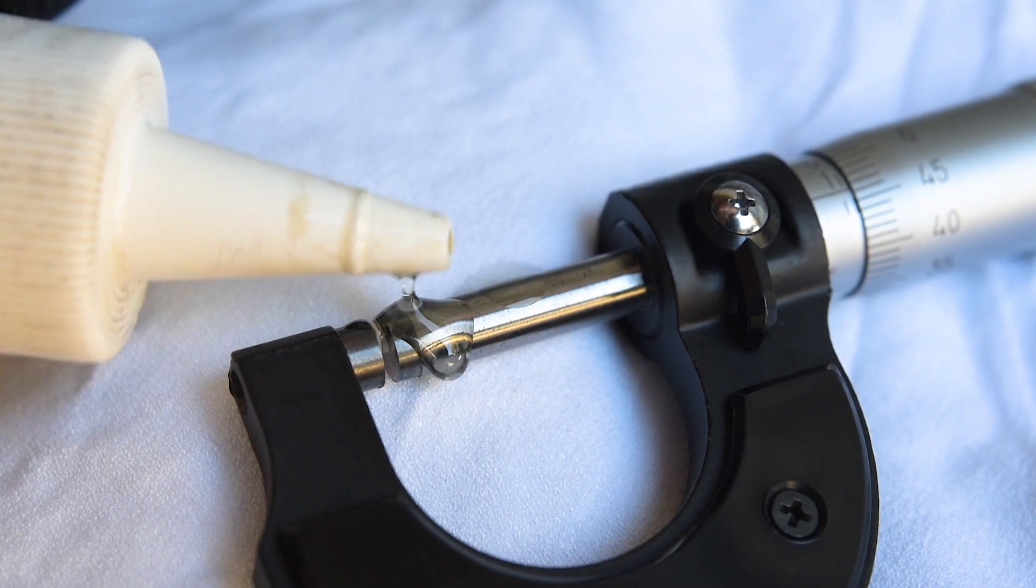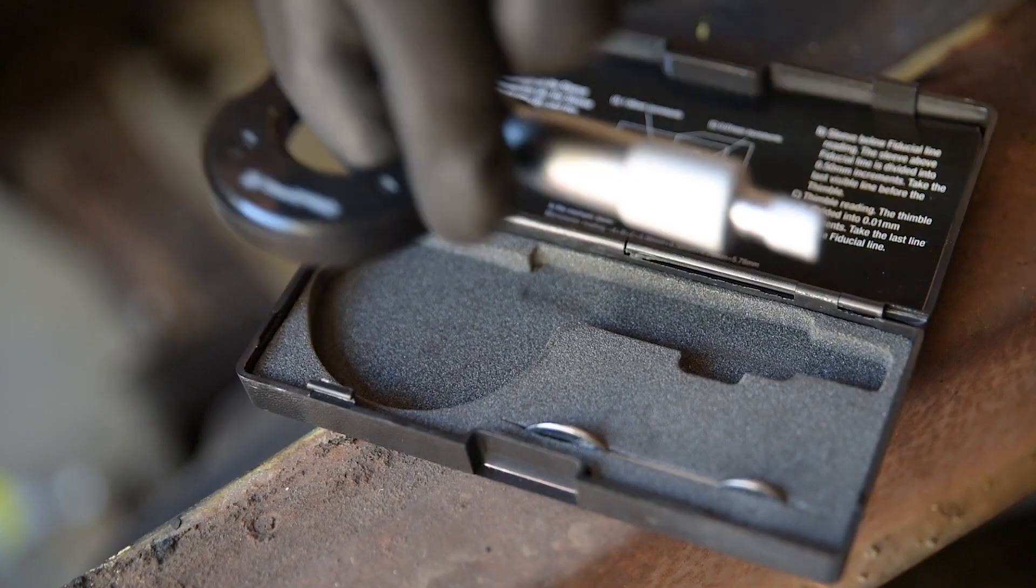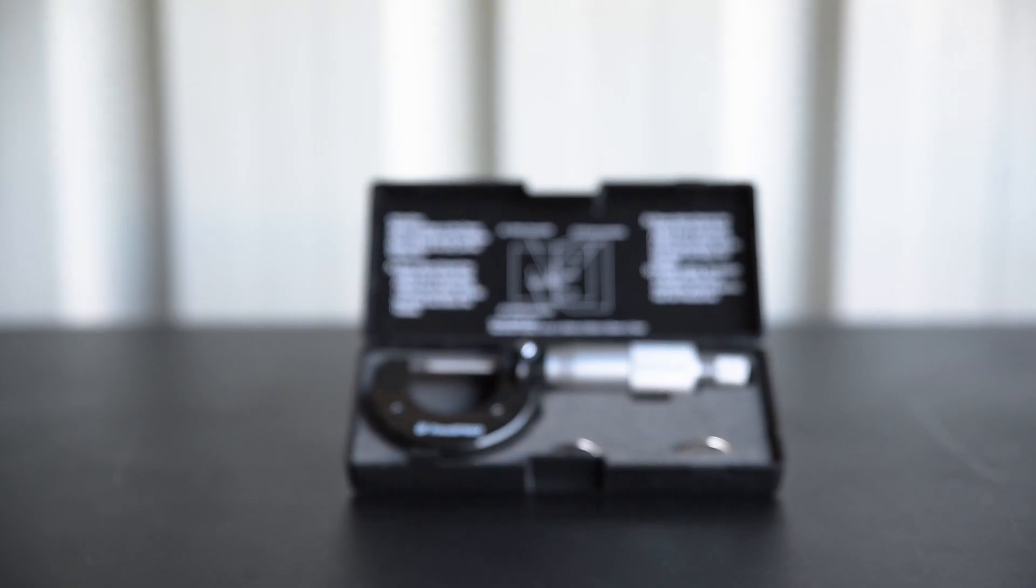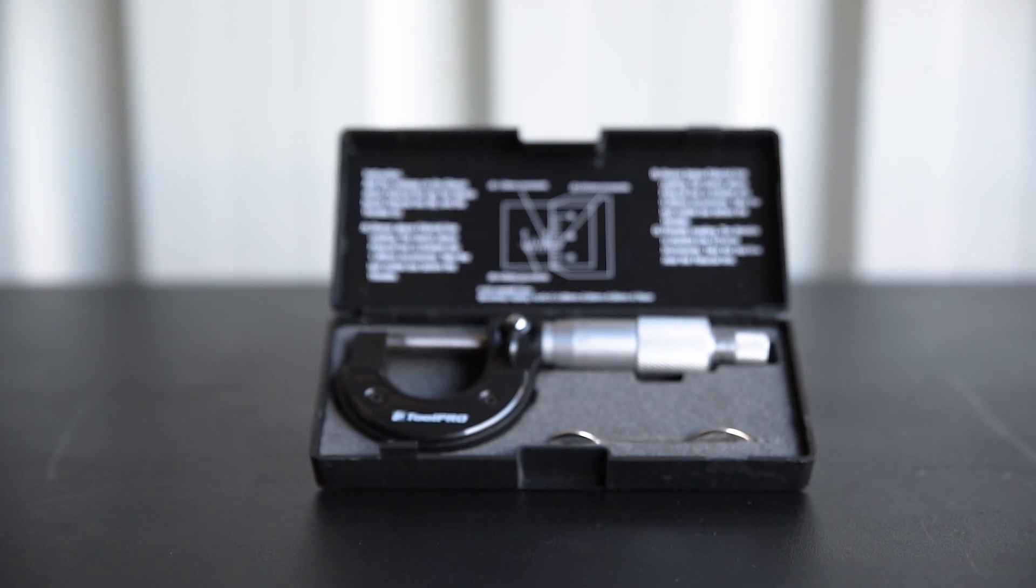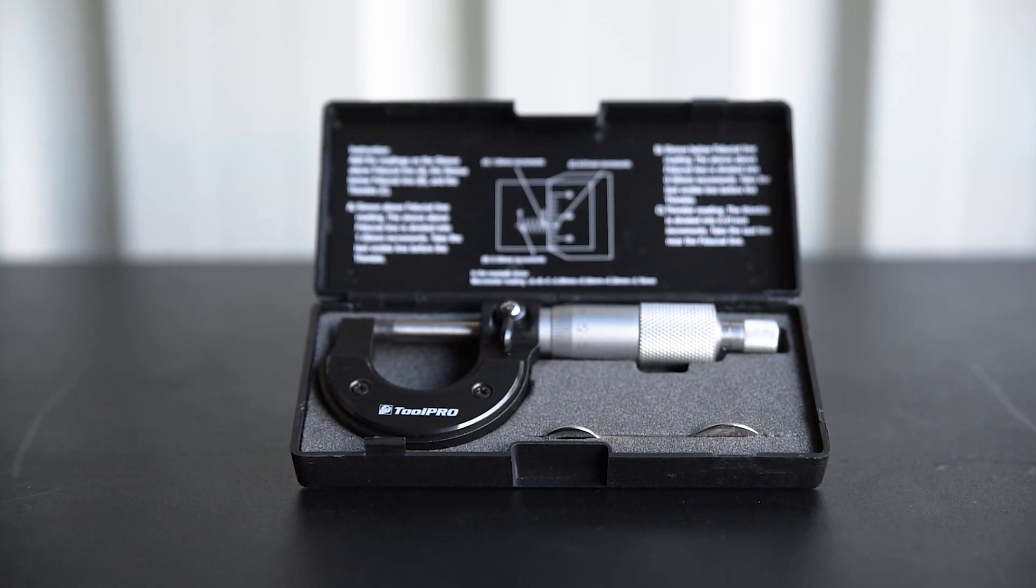Place a drop of machine oil on the spindle once in a while. Keep it safe from knocks in the nifty storage case, and your ToolPro outside micrometer will deliver accurate measurements for years to come.